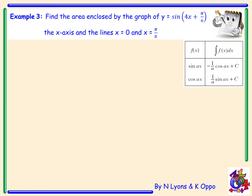Example 3. Find the area enclosed by the graph y equals sin of 4x plus pi over 6 and the x-axis in the lines x is 0 and x is pi over 8. We recognise this is an integral question, with limits 0 and pi over 8. So we have the integral between 0 and pi over 8 of sin of 4x plus pi over 6. Step 1 is to integrate the function: sin integrates to negative cos, and as we have a 4 in front of x, that comes to the front to give negative 1 quarter cos of 4x plus pi over 6.